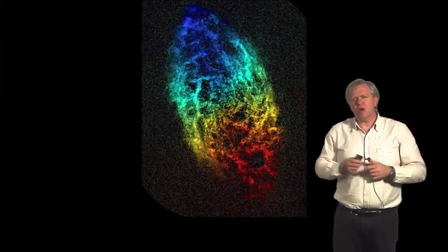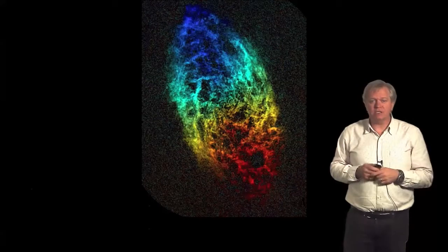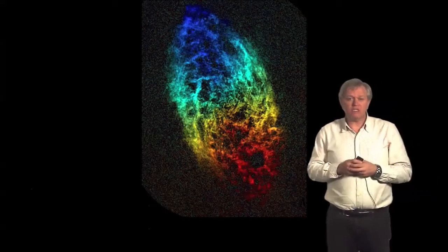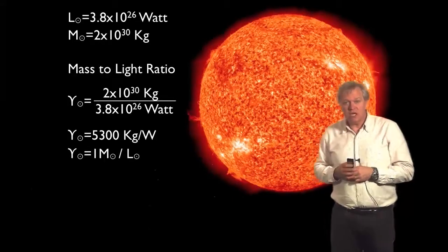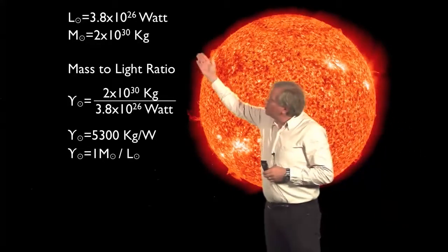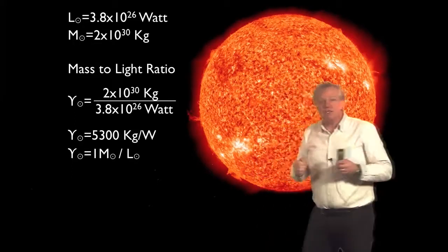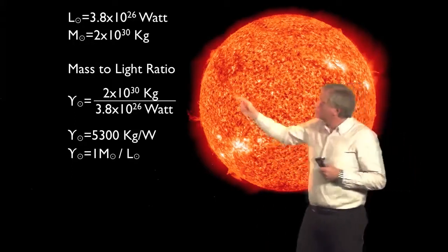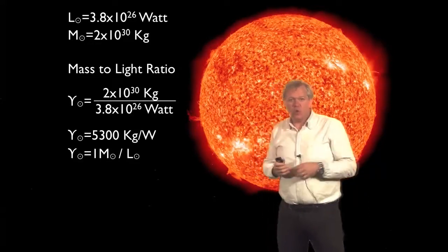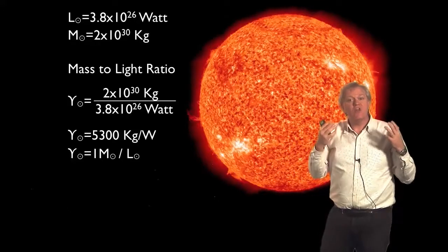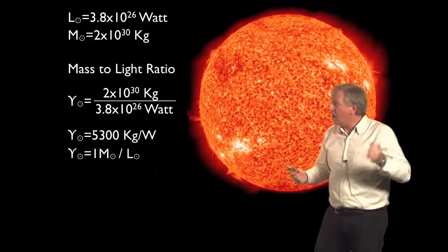How would I measure how heavy something is based on its light? We can start the experiment with looking at something we do know very well, the sun. The sun has a brightness of 3.8 times 10 to the 26 watts, and a weight or mass of 2 times 10 to the 30 kilograms. So we can define something called the mass-to-light ratio, which tells you how many kilograms gives you how many watts.